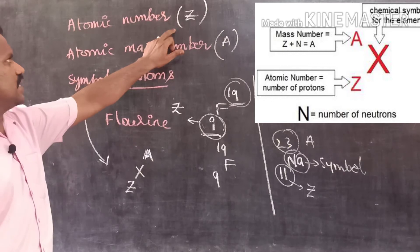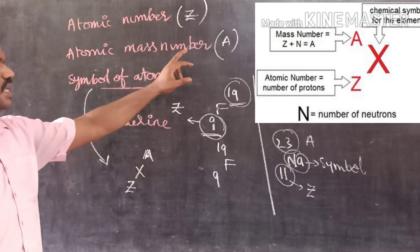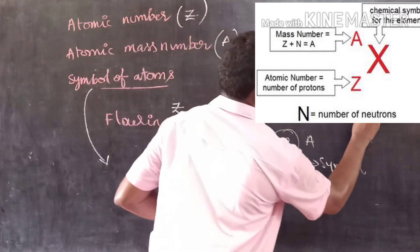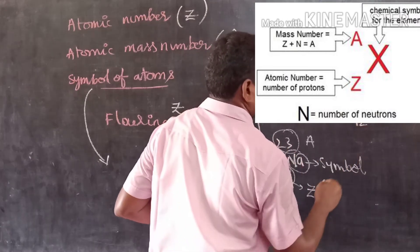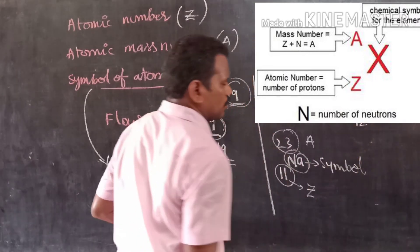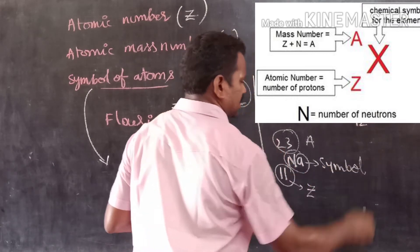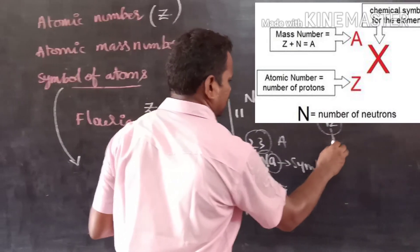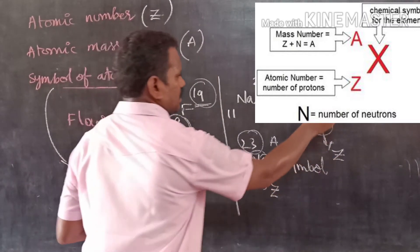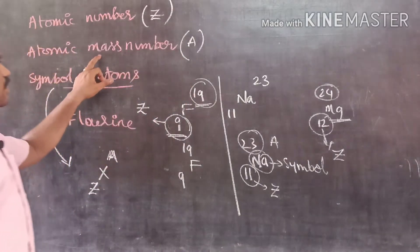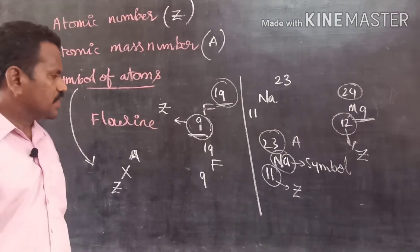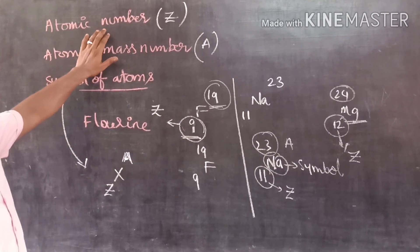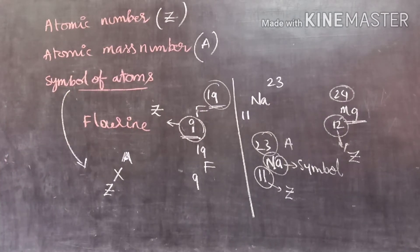Let us discuss the meaning of atomic number and mass number. Taking magnesium as an example: 12-Mg-24. This means the element is magnesium, symbol Mg, where 12 is the atomic number Z, and 24 is the atomic mass number represented by letter A.